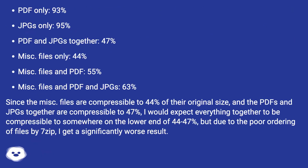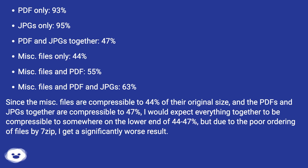PDF only: 93%. JPGs only: 95%. PDF and JPGs together: 47%. Miscellaneous files only: 44%. Miscellaneous files and PDF: 55%. Miscellaneous files, PDF, and JPGs together: 63%. Since the miscellaneous files are compressible to 44% and the PDFs and JPGs together to 47%, I would expect everything together to be compressible to somewhere in the 44–47% range, but due to poor ordering by 7-zip, I get a significantly worse result.